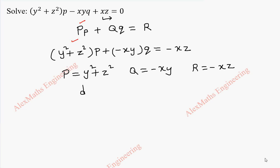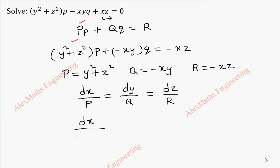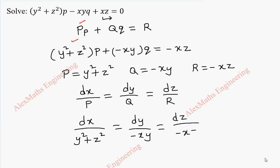To get the solution we have to solve dx by capital P equal to dy by capital Q equal to dz by capital R. Now this is dx by y square plus z square, which is equal to dy by minus xy, which is equal to dz by minus xz.